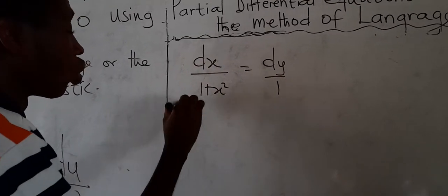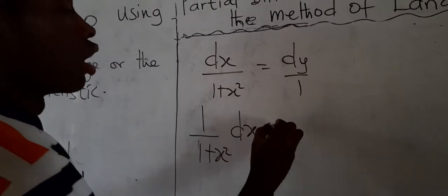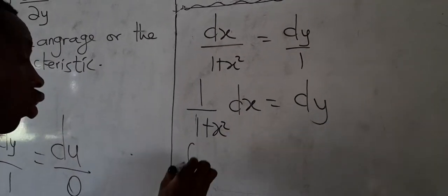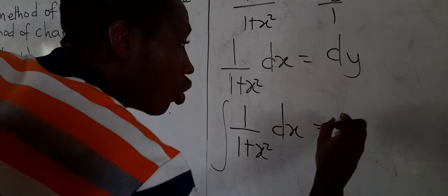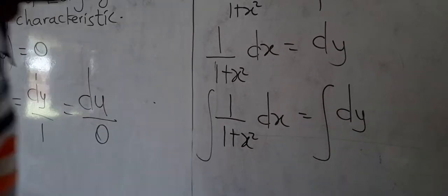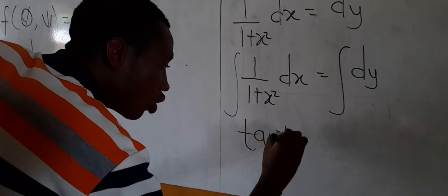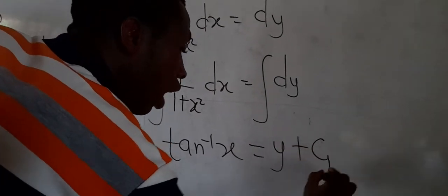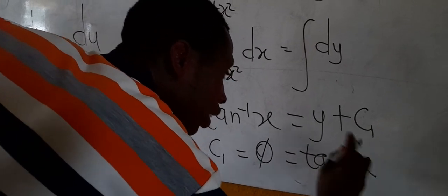To find c1, we equate dx/(1 + x²) = dy/1. There is no need to cross-multiply; we integrate directly: the integral of 1/(1 + x²) dx equals the integral of dy. The integral of 1/(1 + x²) gives tan⁻¹(x), and the integral of dy gives y + c1. Making c1 the subject, c1 = π = tan⁻¹(x) − y.